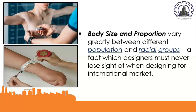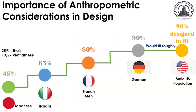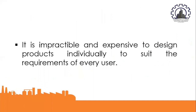For example, a U.S. manufacturer hoping to export products to Mexico and Vietnam would need to consider how product dimensions optimized for a large U.S. user group would suit Mexican and Vietnamese users. Vietnam belongs to one of the smallest populations in the world. Ashley 1979 illustrated that if equipment was designed to fit 90% of the male U.S. population, it would fit roughly 90% of Germans, 80% of French, 65% of Italians, 45% of Japanese, 25% of Thais, and 10% of Vietnamese.